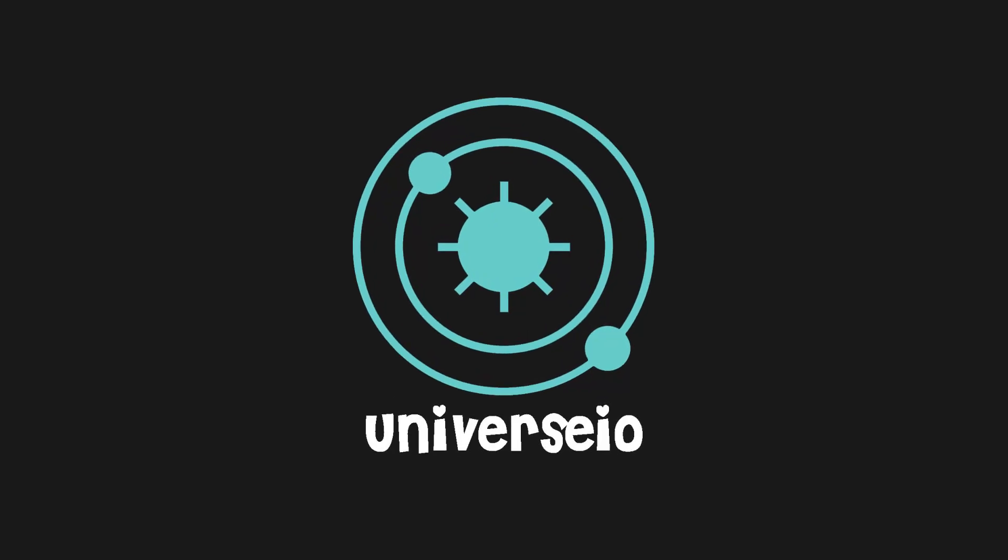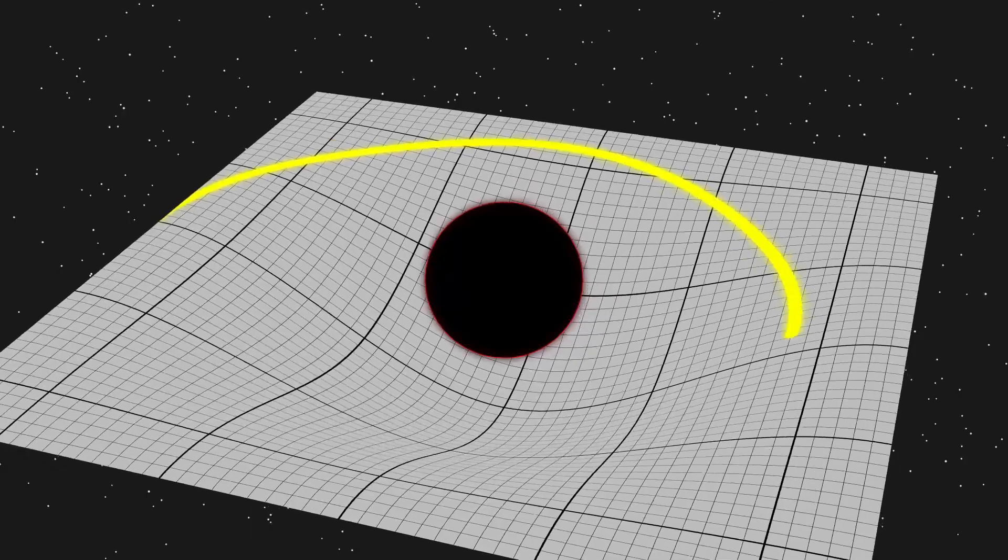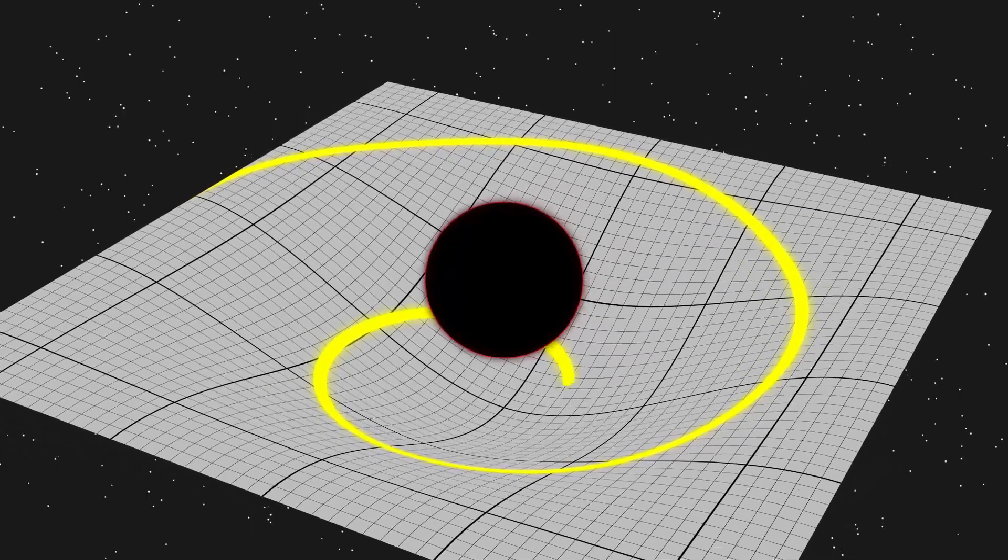Welcome back to Universeo. Today we are going to talk about the end of space and time inside a black hole. It was long believed that nothing could escape a black hole, not even light, which is why black holes appear black.